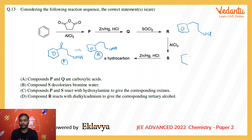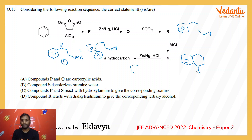So S would be the resulting diketone-type product, and one more time on Clemmensen reduction with zinc amalgam and HCl, this will form the final hydrocarbon — that is the end product.